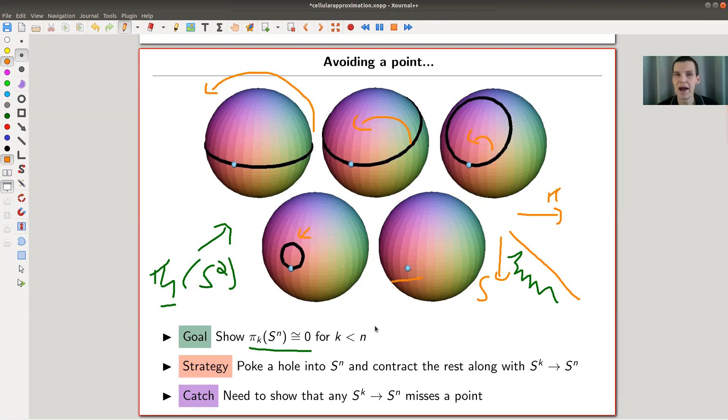To just one point. And the way to make this a little bit more precise is because of course for the equator you can do that, but you want to do that for any loop. The strategy which I call poking holes: you just take your S^n or S^2 in my example here, poke a hole somewhere to flatten it open.